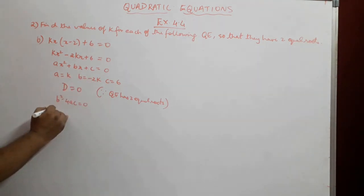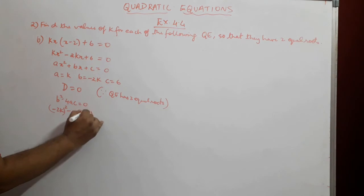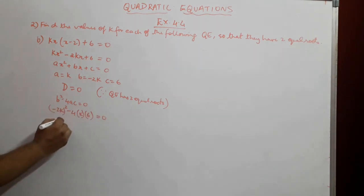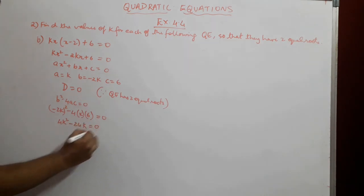D is b² - 4ac, which is equal to 0. b is -2k, so (-2k)² - 4 × a, which is k, × c, which is 6 = 0. (-2k)² will give us 4k², positive 4k², and here we will get 4 × k × 6 gives us 24, 24 × k gives us 24k, minus 24k = 0.